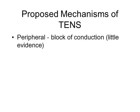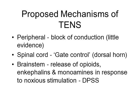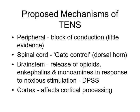TENS was actually designed on the basis of the pain gate theory, where stimulation of large diameter afferent nerves inhibits the activity of dorsal horn cells involved with nociception. This is likely to be an important mechanism. TENS has also been reported to cause the release of endogenous opioids and to activate descending pain suppression systems. High intensity stimulation is required to activate these mechanisms. TENS may also have effects on the processing of noxious information at cortical levels.